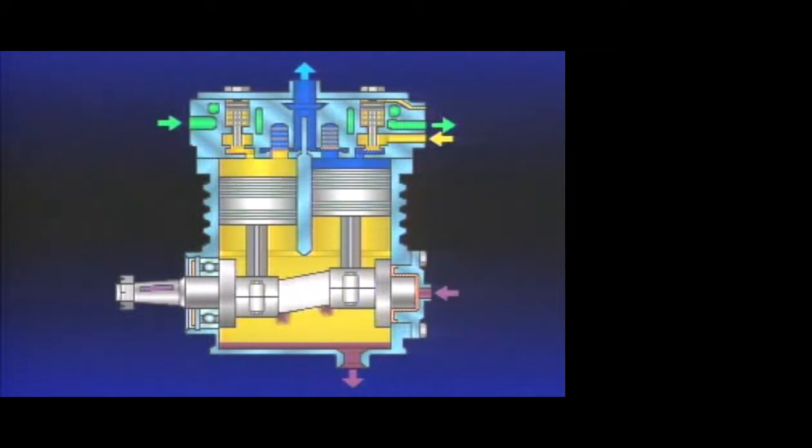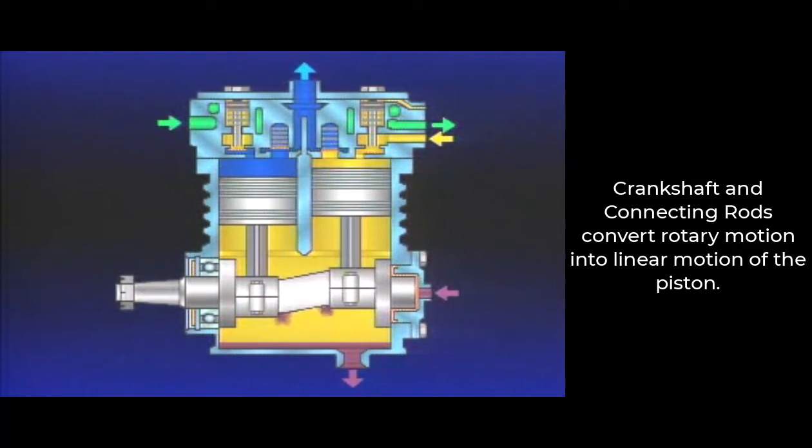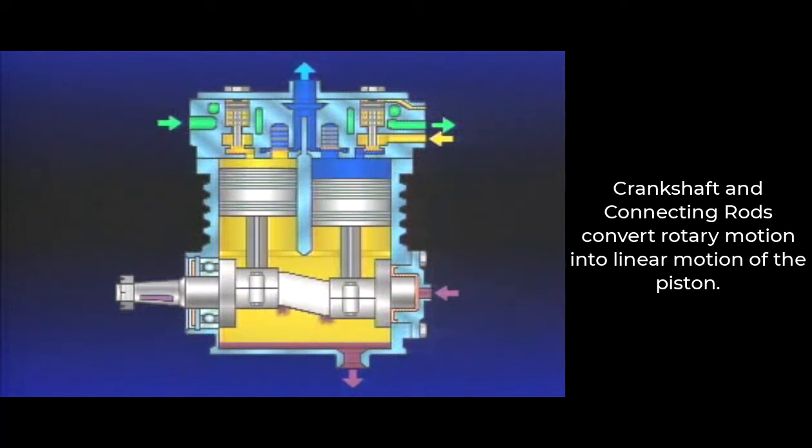The compressor crankshaft and connecting rods convert the rotational force of the engine to a vertical linear force in the compressor pistons.